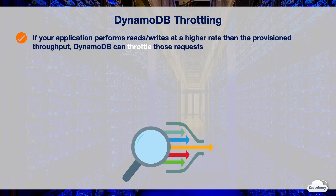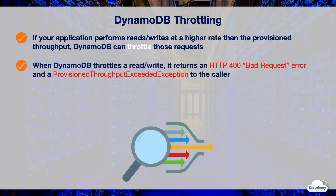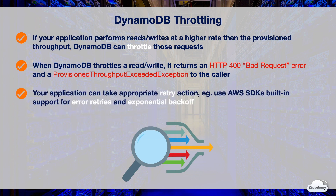If your application performs reads or writes at a higher rate than the provisioned throughput, DynamoDB can throttle those requests. Throttling prevents your application from consuming too many capacity units. When DynamoDB throttles a read or write request, it returns an HTTP 400 Bad Request error and a ProvisionedThroughputExceededException to the caller. Your application can take appropriate retry action for throttled requests — for example, using the built-in support of AWS SDKs for error retries and exponential backoff.